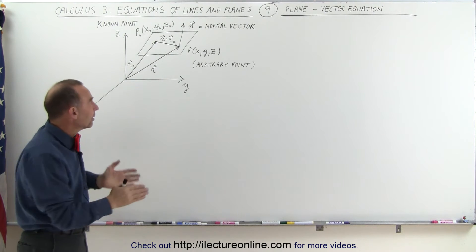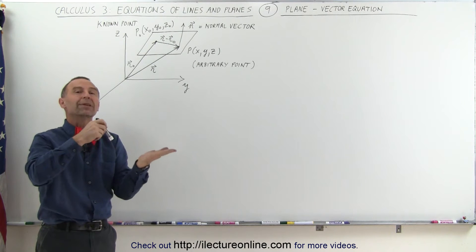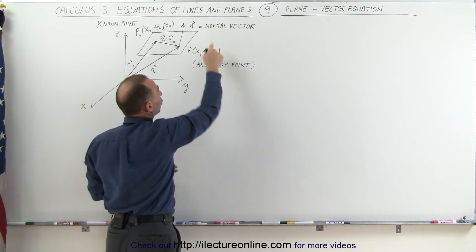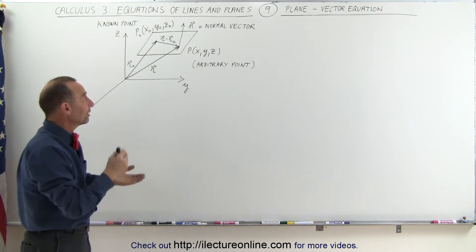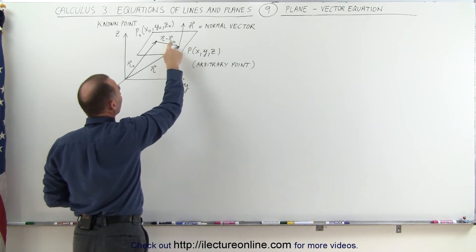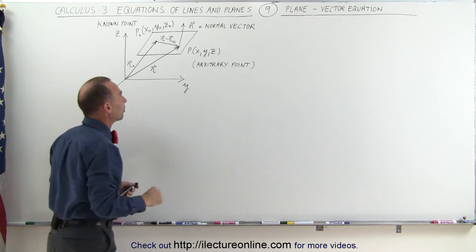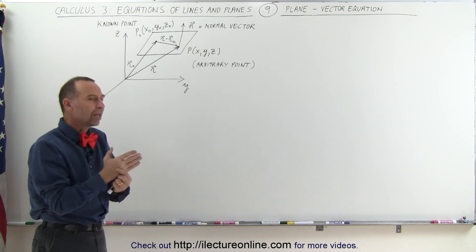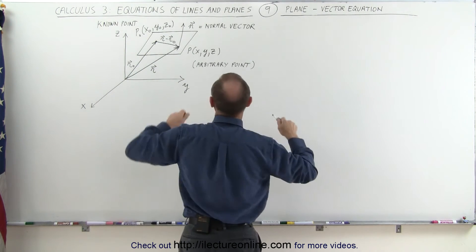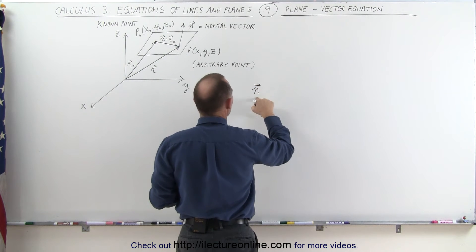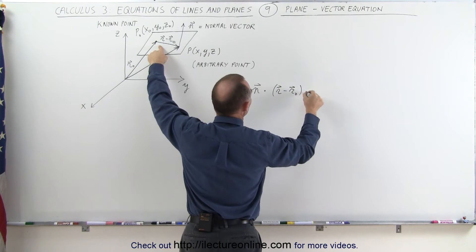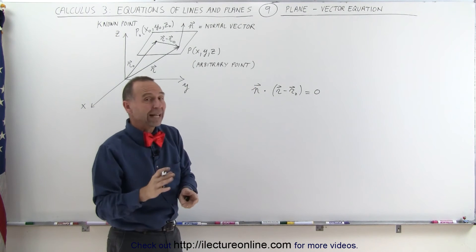Now there's one more thing you need to define a plane. You need to define a vector which is perpendicular to the plane. If this is the plane, we need a perpendicular vector to the plane — let's call N the normal vector, or the perpendicular vector to the plane. If N is perpendicular to the plane, then we know there must be a 90-degree angle between the normal vector and the vector drawn from the known point to the arbitrary point. Which means the dot product of two vectors which are orthogonal or perpendicular to each other must equal zero, so N dotted with R minus R sub-naught equals zero.